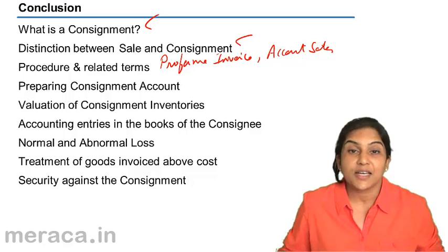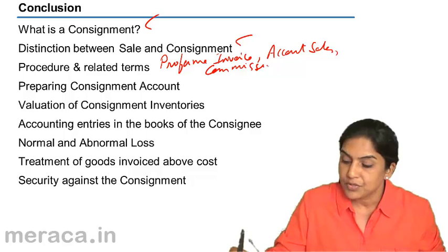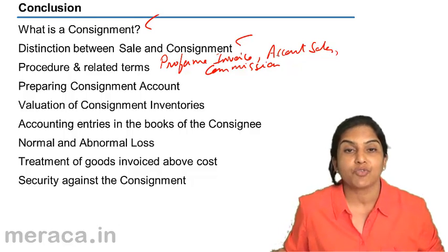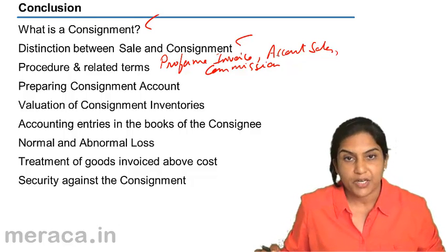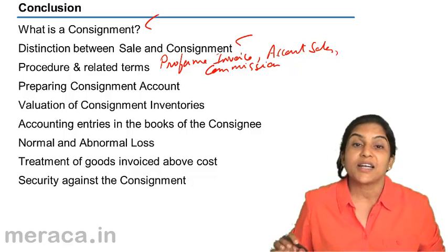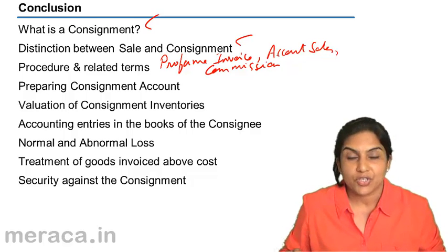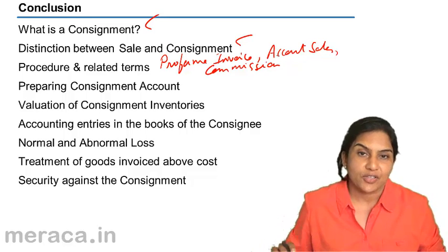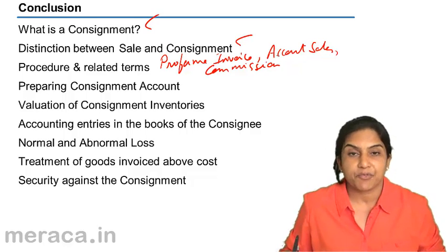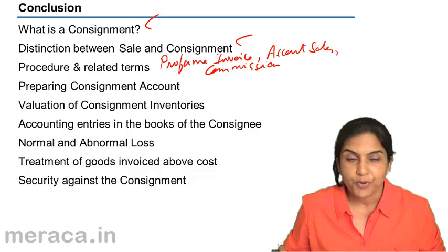We also discussed commission. Ordinary commission is normally paid to the consignee as a percentage of total sales. In addition to ordinary commission, sometimes a del credere commission is paid so that any bad debt losses would be borne by the consignee and not the consignor. We also covered another type called overriding commission, which is paid by the consignor in order to market a new product.